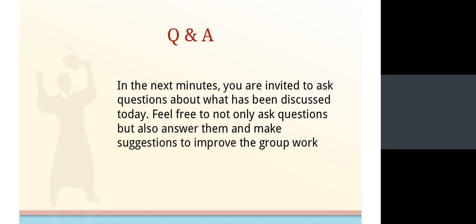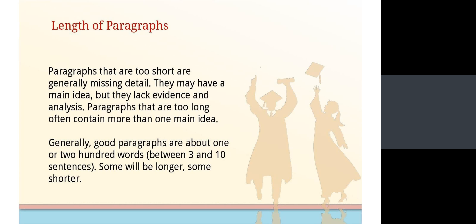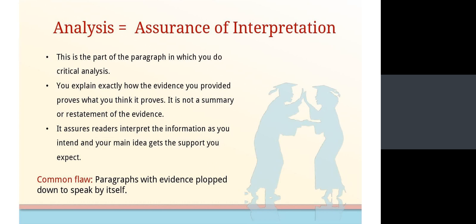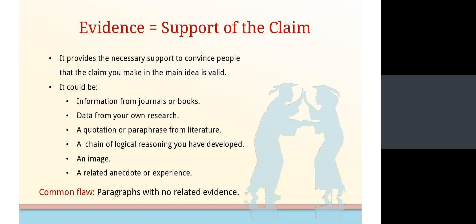Joyce asks: 'I was wondering how evidence and analysis could be distinguished clearly in my writing.' Remember that evidence takes the form of information from journals or books in terms of citations, data from your own research, paraphrase from literature, a chain of logical reasoning, an image, or a related experience. This is the form that evidence takes.